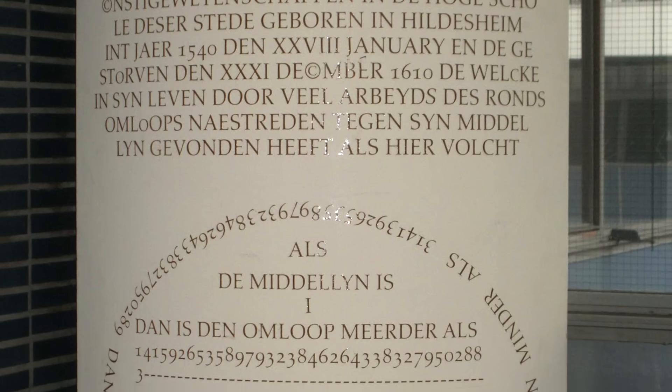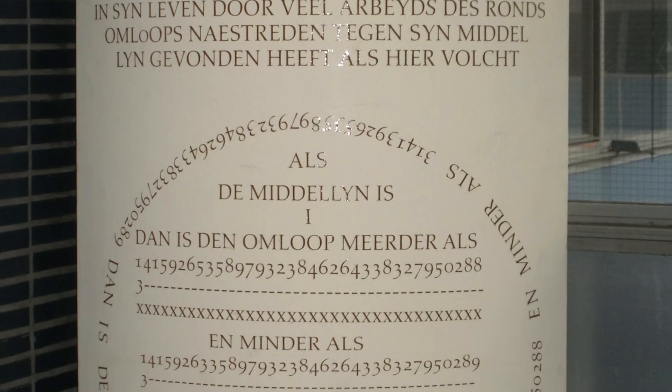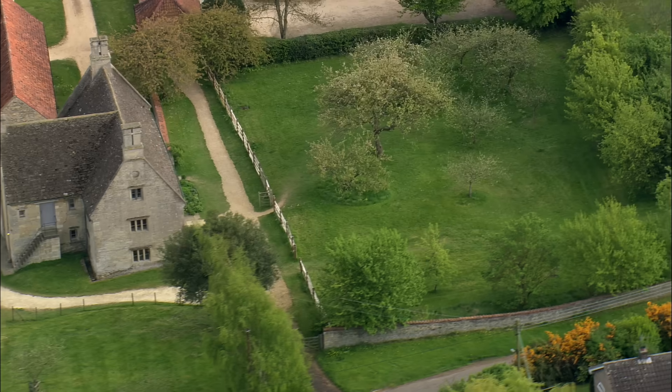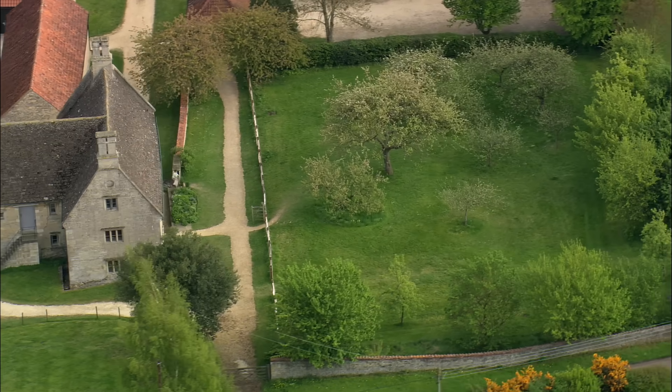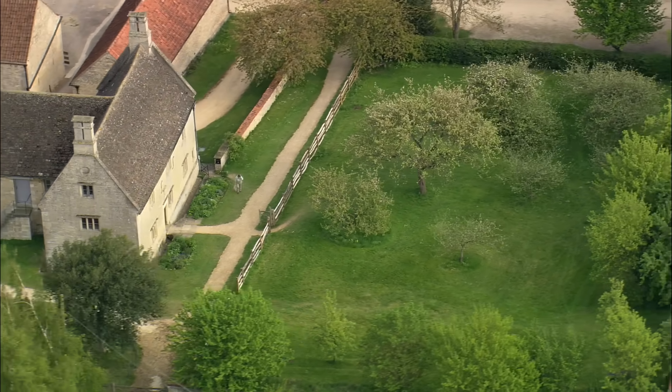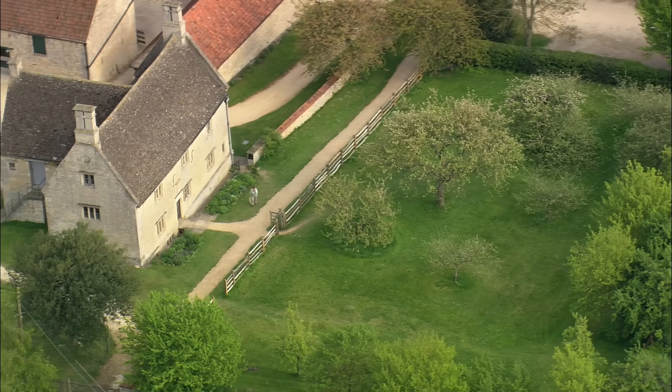Twenty years later, his record was surpassed by Christoph Grienberger, who got 38 correct decimal places. But he was the last to do it like this, because shortly thereafter we get Sir Isaac Newton on the scene. Once Newton introduces his method, nobody is bisecting n-gons ever again. The year was 1666, and Newton was just 23 years old, quarantining at home due to an outbreak of bubonic plague.